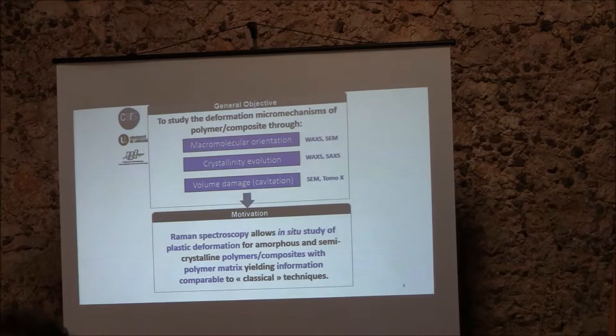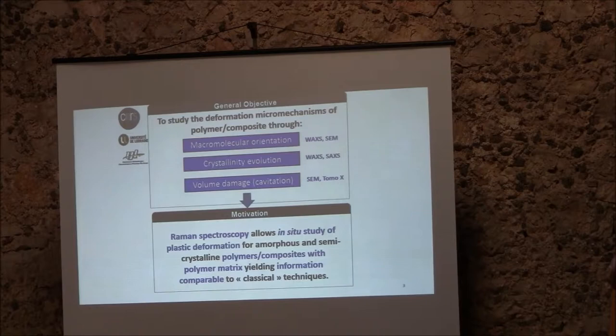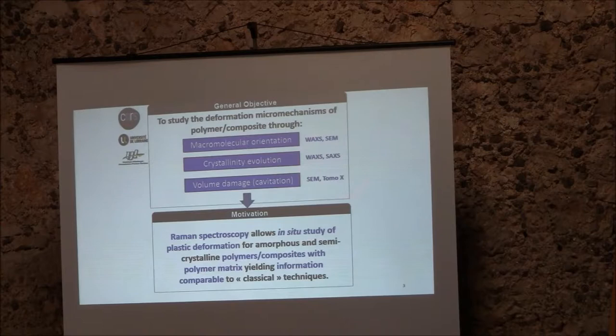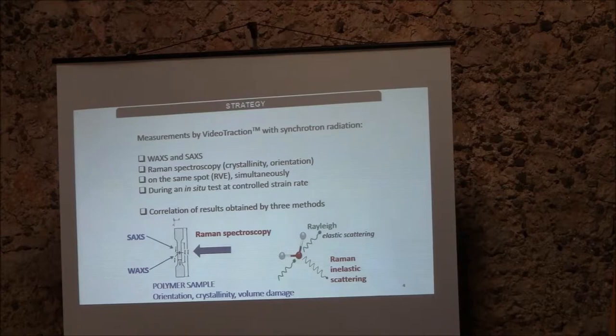Usually these subjects are studied by classical techniques such as X-rays, SAXS, WAXS, SEM, or X-ray tomography. What I'm going to show you is that you can use Raman spectroscopy as well to study in-situ plastic deformation for amorphous or semi-crystalline polymers, or composites with a polymer matrix, yielding information comparable to these classical techniques.